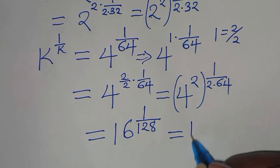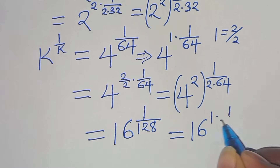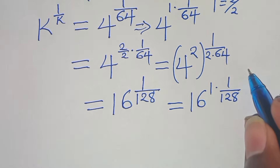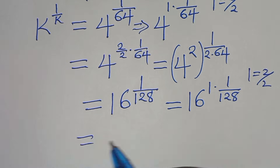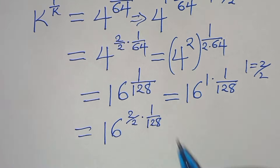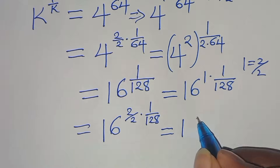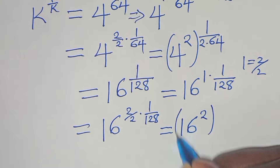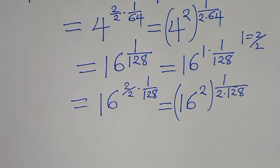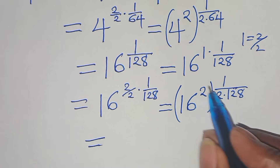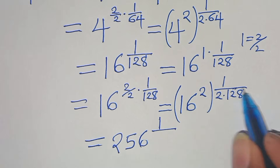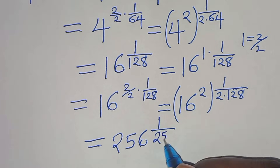We express this as 16 to the power of 1 times 1 over 128. Again expressing 1 as 2 over 2, we have 16 to the power of 2 over 2 multiplied by 1 over 128. This gives us 16 to the power of 2, raised to the power of 1 over 2 times 128. Since 16 squared is 256 and 2 times 128 is 256, we get 256 raised to the power of 1 over 256.